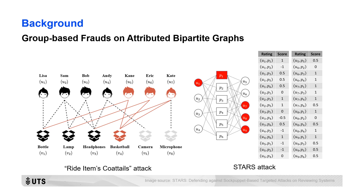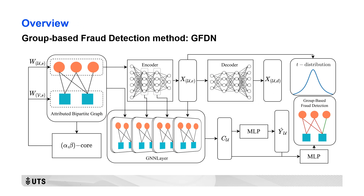Because these fraudsters can disguise themselves as ordinary users, existing fraud detection models often have difficulty detecting them. Therefore, we have proposed a detection model for group-based fraud, called UFDN.